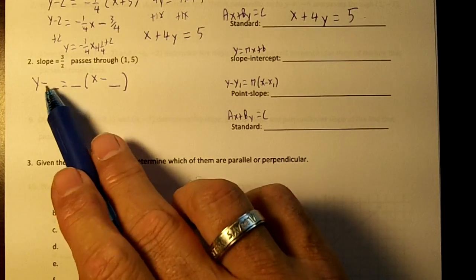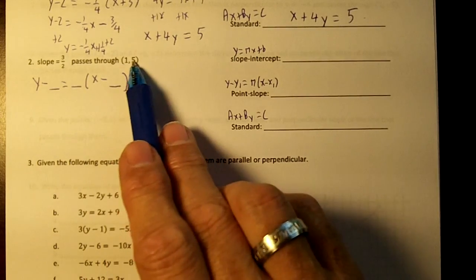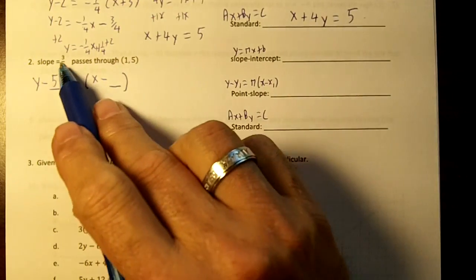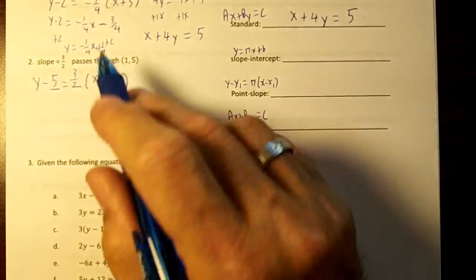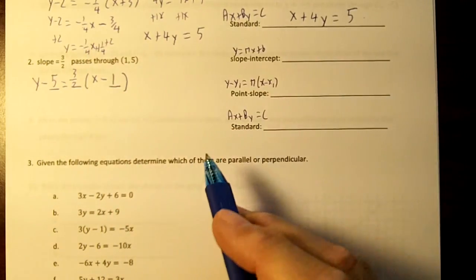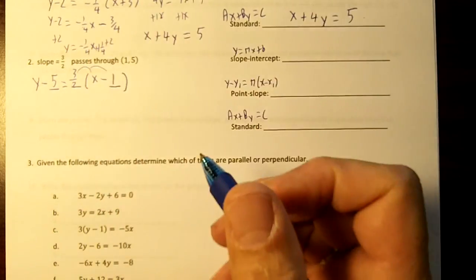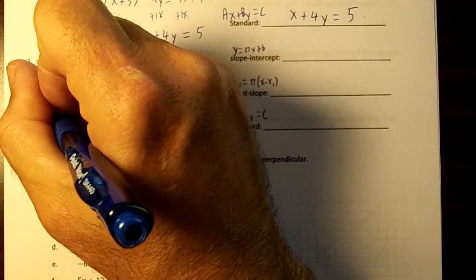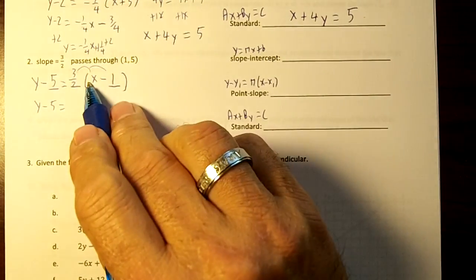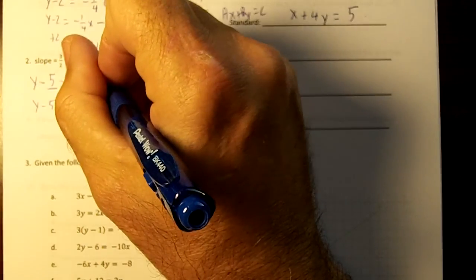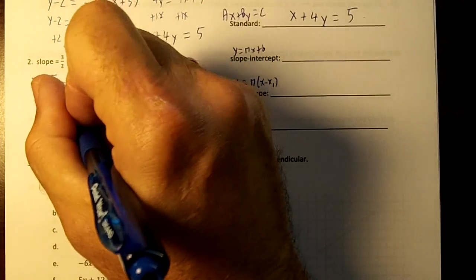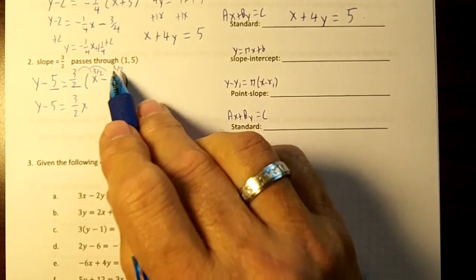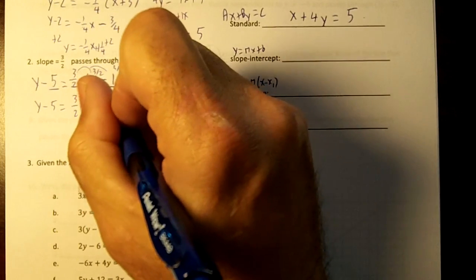Okay, we'll start from left to right. Our y is going to be 5, so we're going to put a 5 here. Our slope will be 3 over 2, and our x is going to be 1. Now we're going to distribute the 3 over 2. So we'll get y minus 5 equals 3 over 2x. Distribute the 3 over 2 to both terms. 3 over 2 times x is 3 over 2x. 3 over 2 times negative 1 is negative 3 over 2.